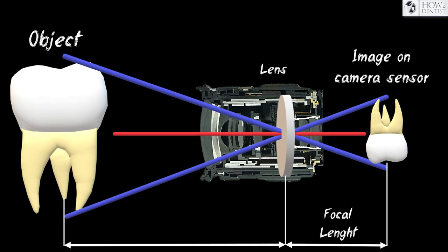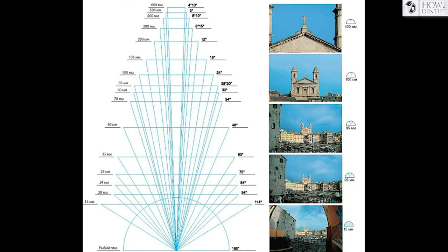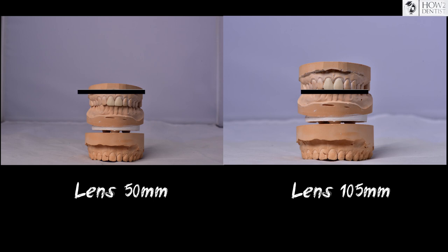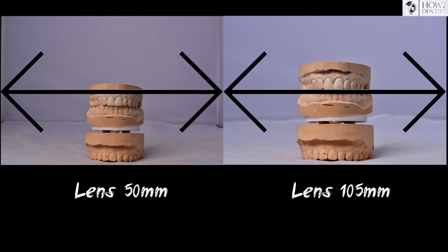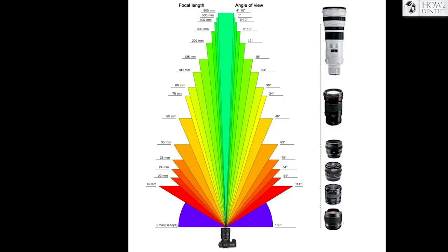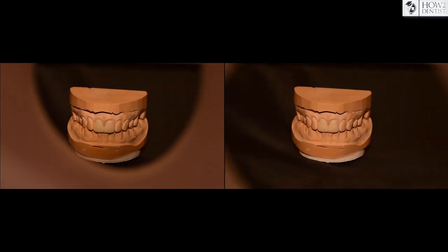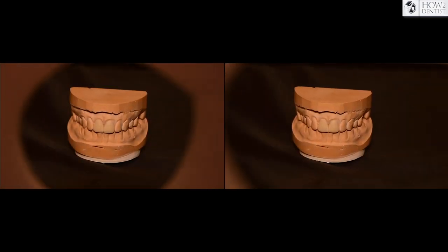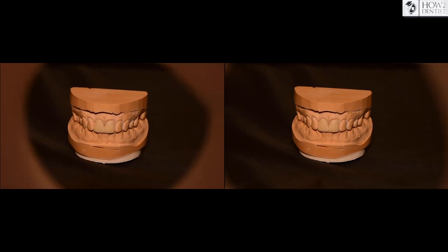Focal length, roughly speaking, is the distance from the center of the lens to the camera sensor, measured in millimeters. The angle of view and scale depend on the focal length. The angle of view is all that fits into the photo from left to right. In the diagram you can see how the angle of view and focal length affect each other.